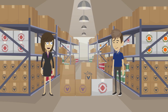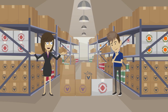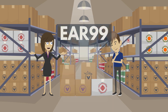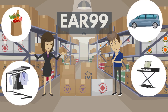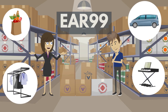If your items are subject to the Export Administration Regulations but not specifically described on the Commerce Control List, they likely fall into a basket category called EAR-99. A lot of consumer goods are designated EAR-99.